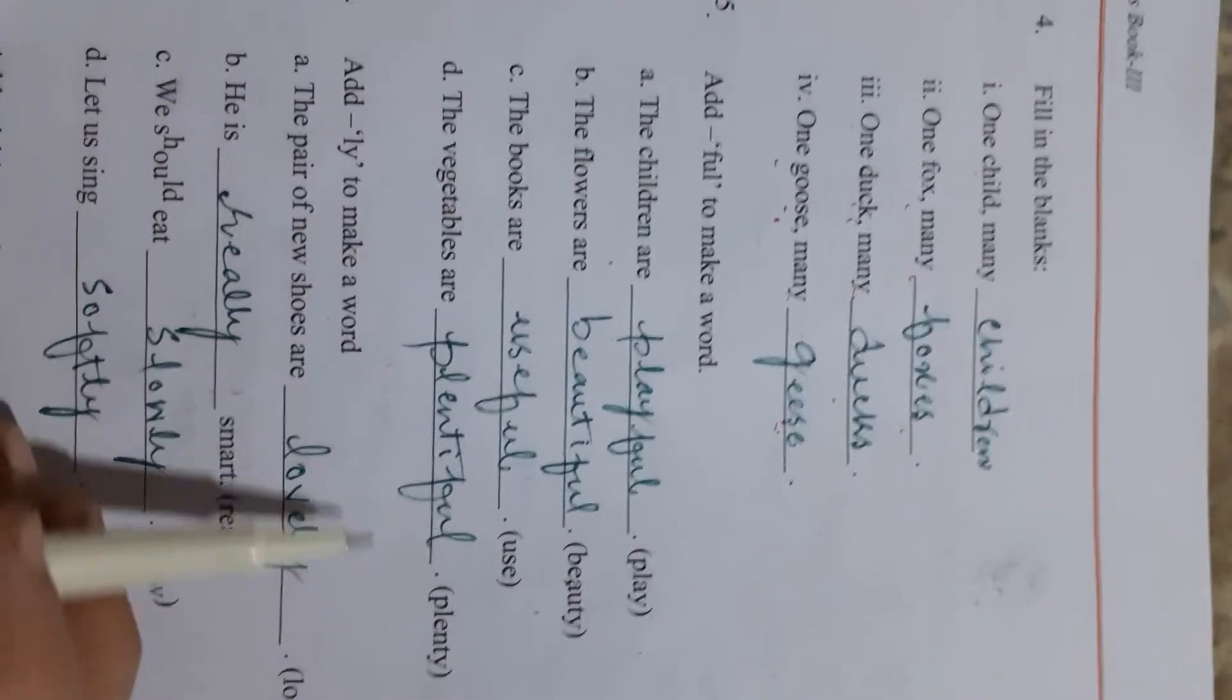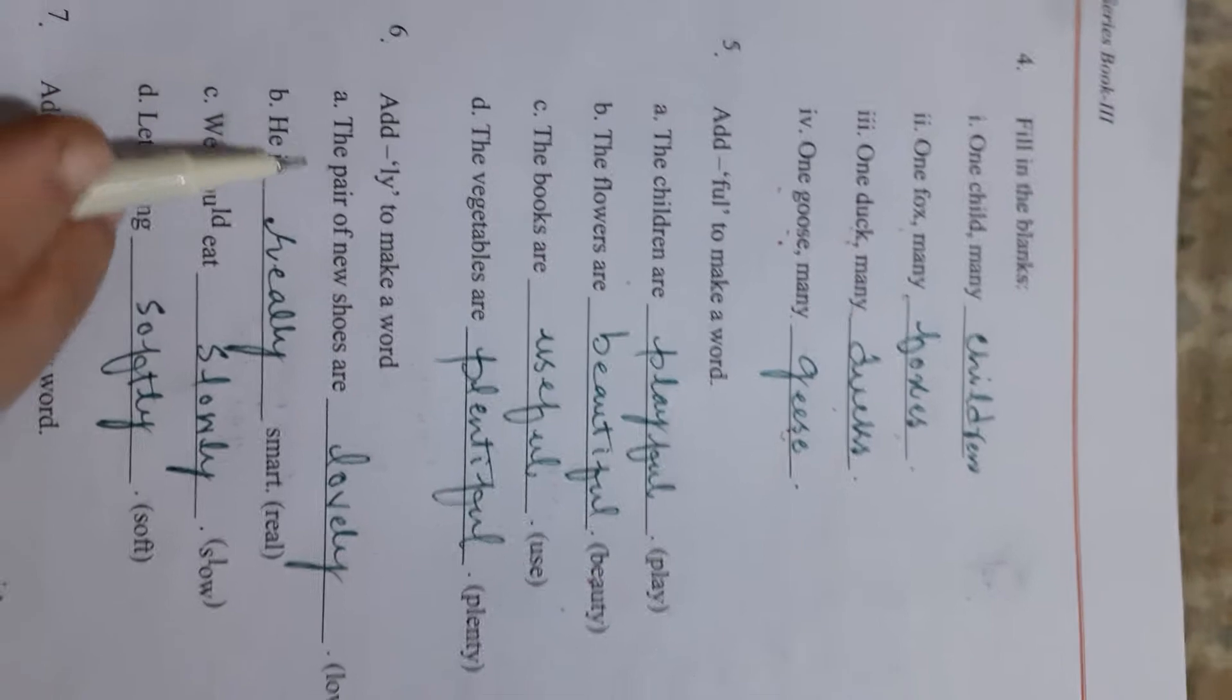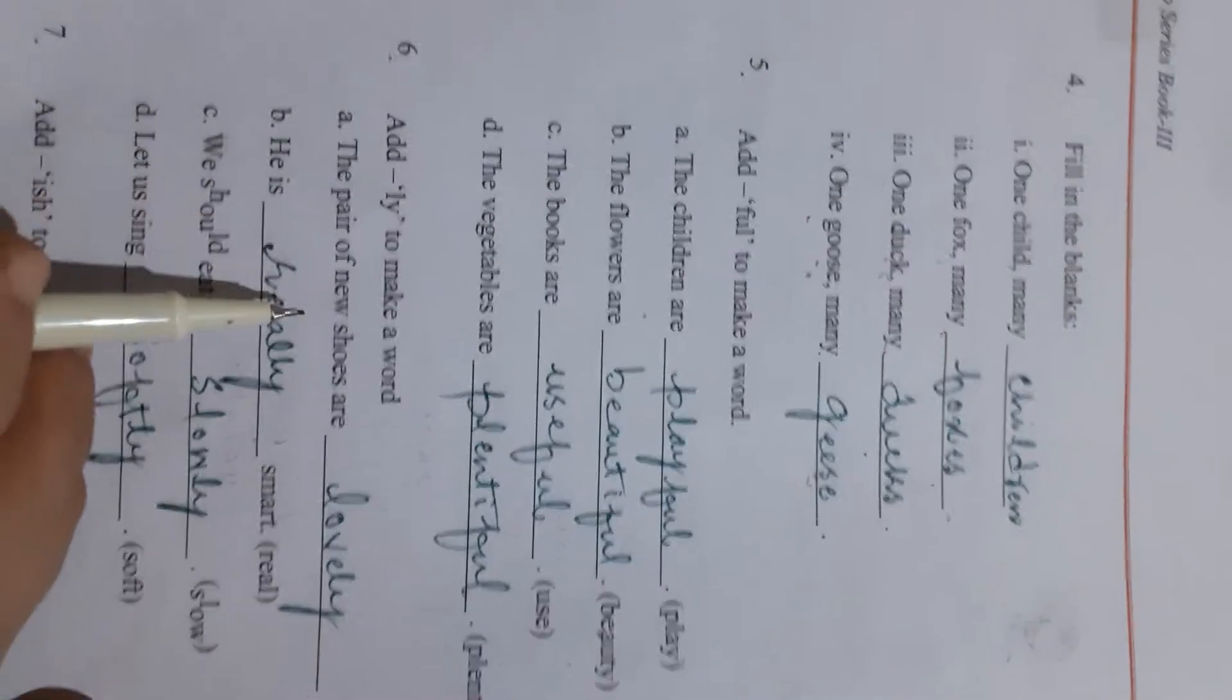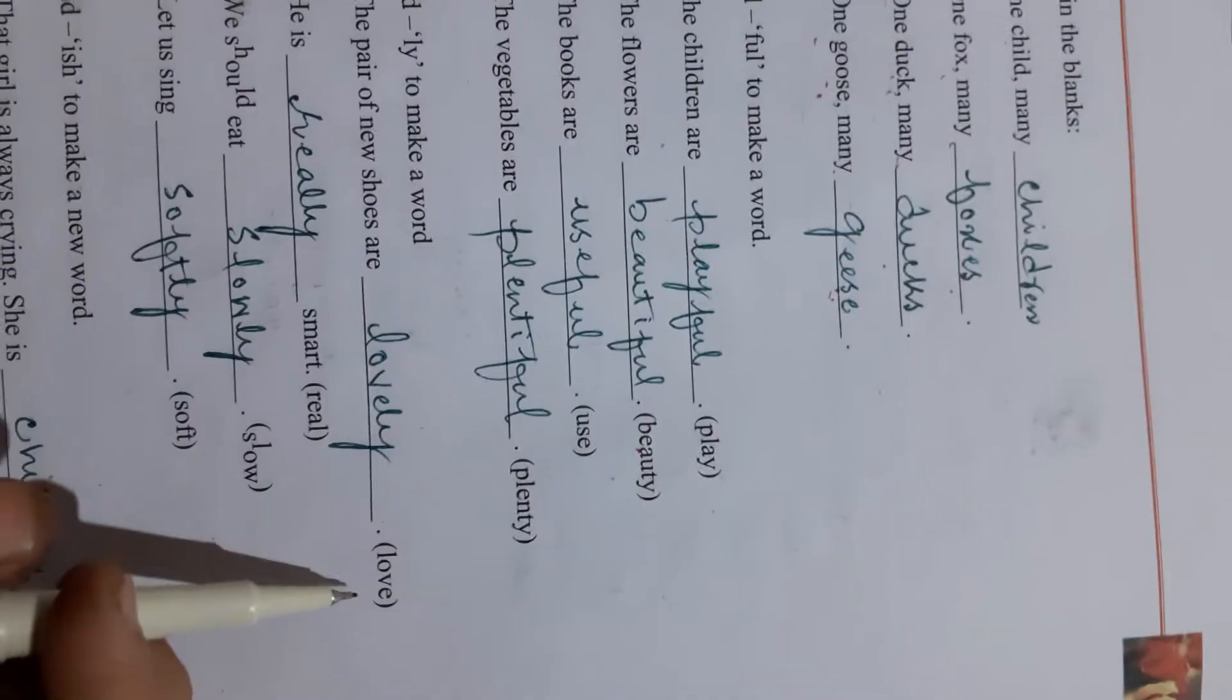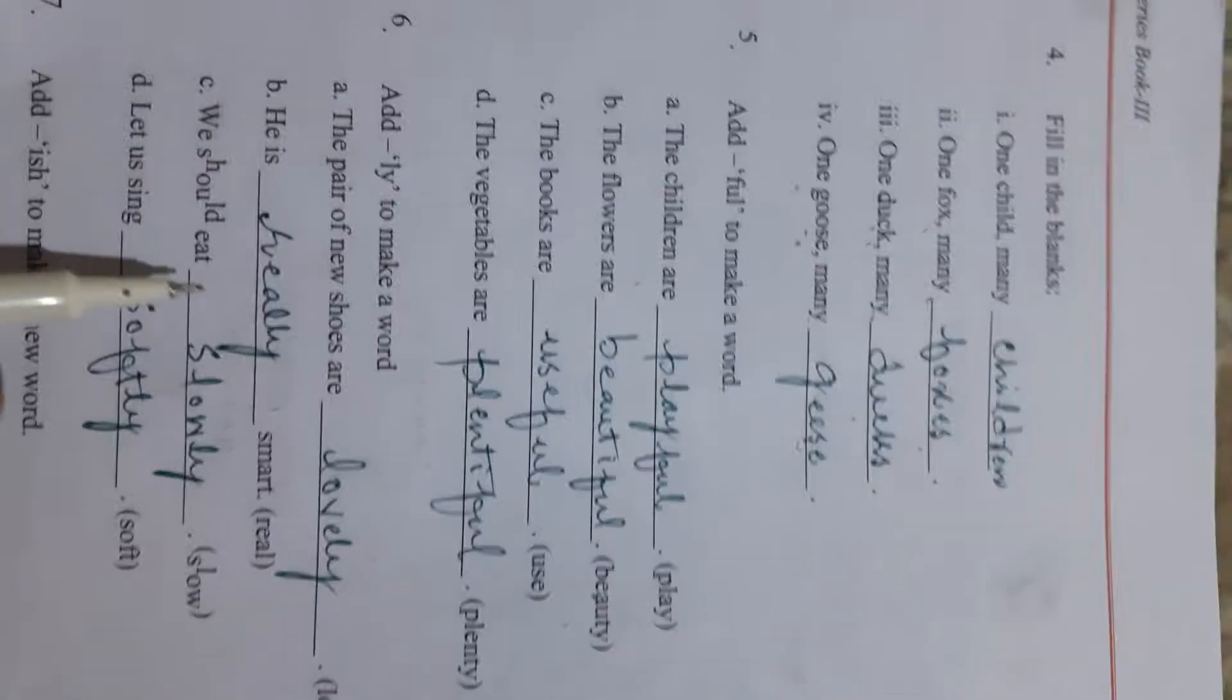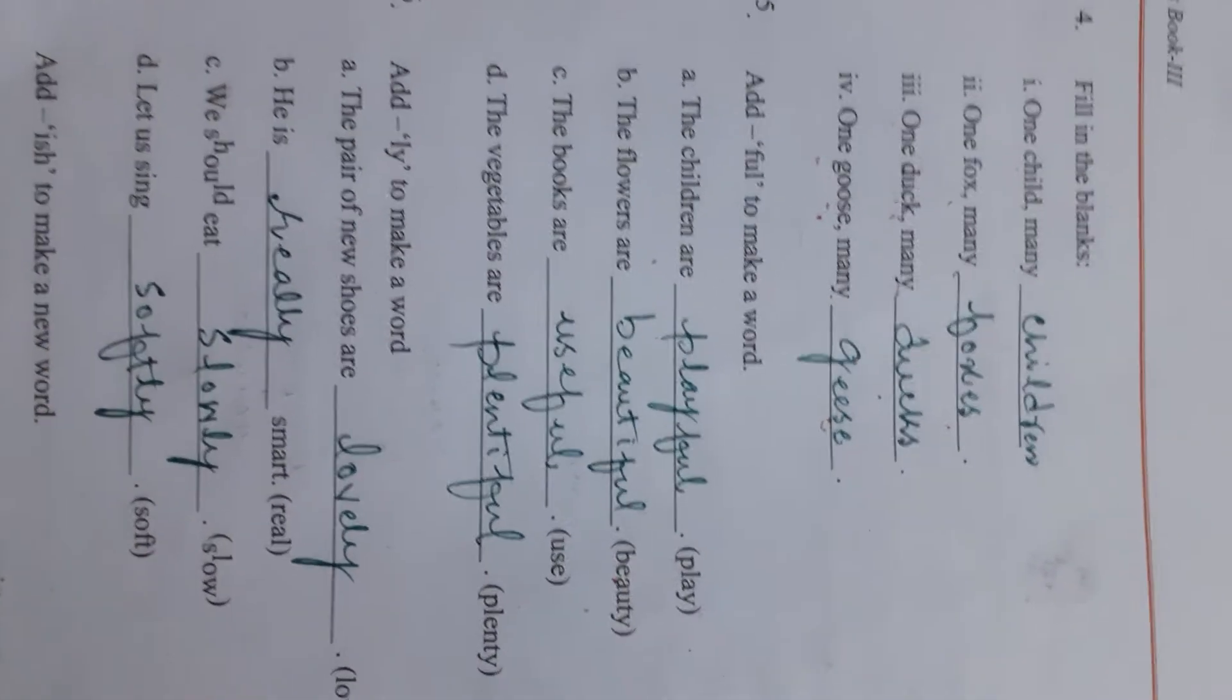The vegetables are plentiful. Add ly to make a word. The pair of new shoes are lovely. He is really smart. We should eat slowly. Let us sing softly.